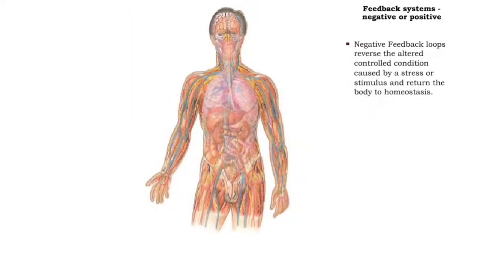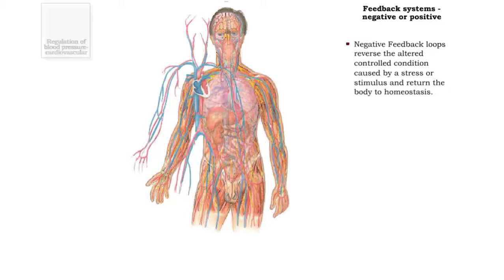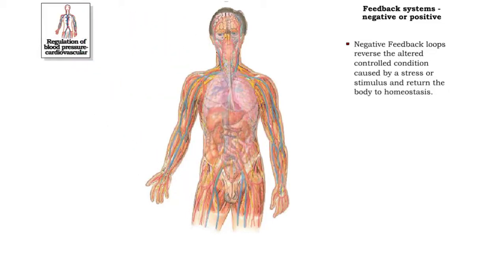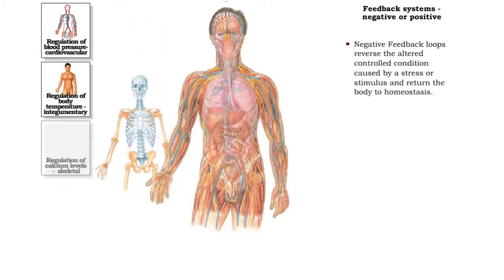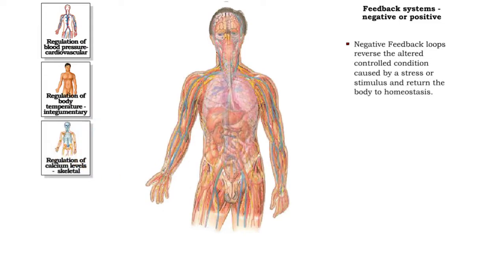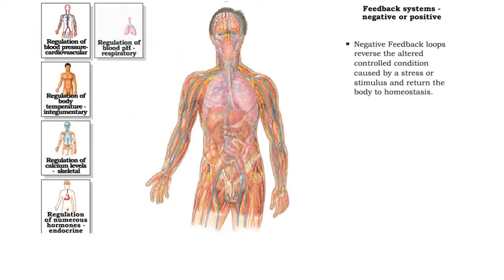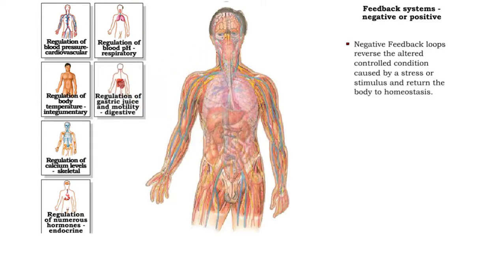Most of the body's systems use negative feedback systems to maintain homeostasis. They are called negative because they reverse the altered controlled condition. For example, if a stimulus causes a rise in blood pressure, the feedback cycle will reverse this and lower the blood pressure. When the controlled condition is returned to its normal state by the feedback system, homeostasis is attained.